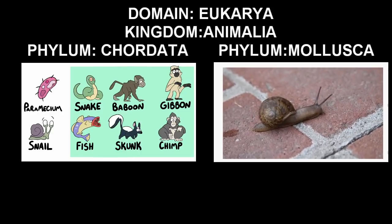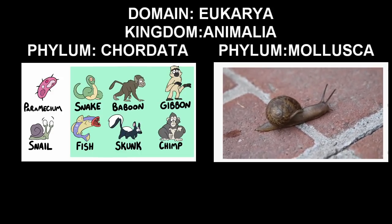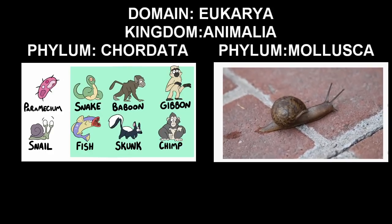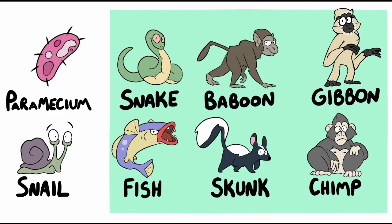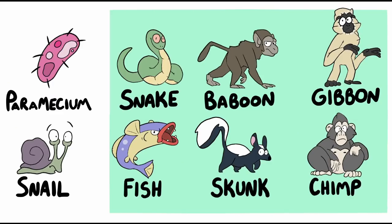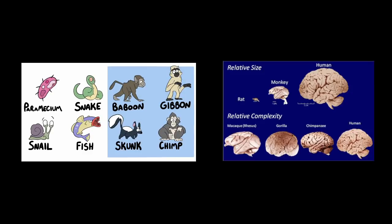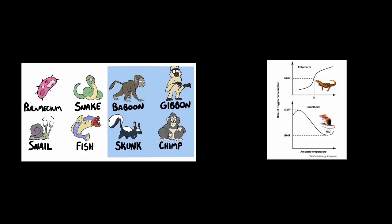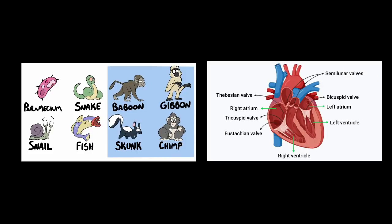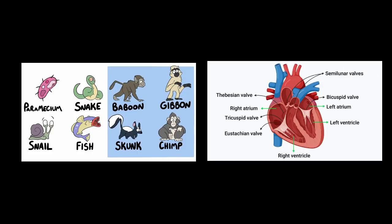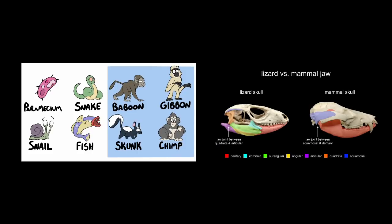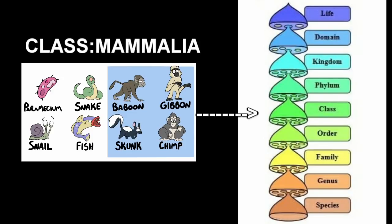This is starting to feel a bit like a Russian nesting doll — that's why it's called a nested hierarchy. At the next level, class, we see a split that separates our remaining critters into three groups. Some of the animals — the skunk, baboon, gibbon, and chimpanzee — have a large neocortex and a corpus callosum, utilize endothermy, have three auditory ossicles or ear bones, possess a four-chambered heart with two atria and two ventricles, and have a dentary squamosal joint. These traits, along with many others, make them all mammals, or members of the class mammalia.